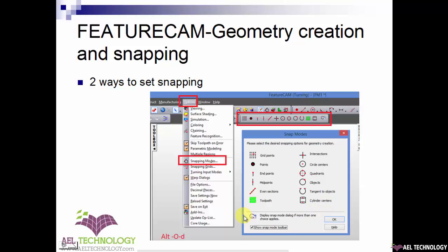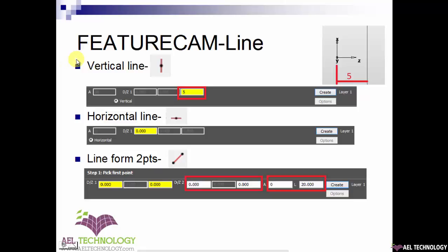The other way of setting snapping is using the snapping menu bar. This menu bar might not be available when you open FeatureCAM for the first time. You need to select it by right-clicking in the menu region and ticking it. We will start with how to create lines — beginning with a vertical line, as it is easy to create. When you click on the vertical line icon, you will see a yellow input box where you enter the dimension. If you enter 5, you will create a vertical line parallel to the x-axis that is 5mm.